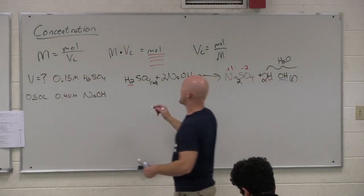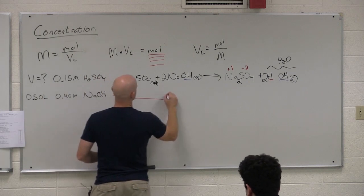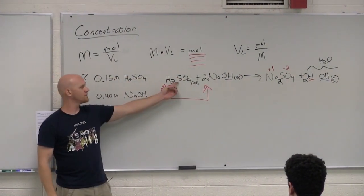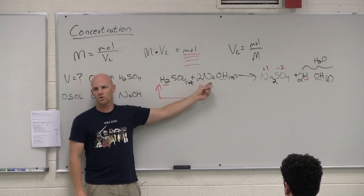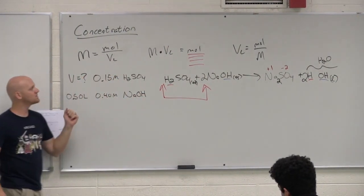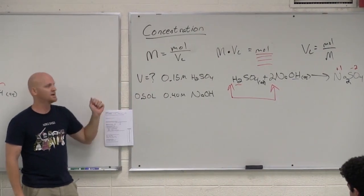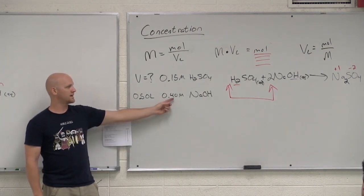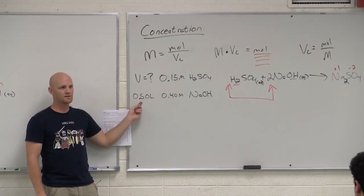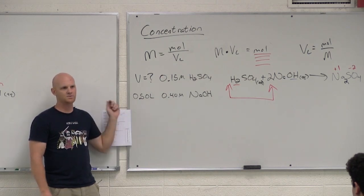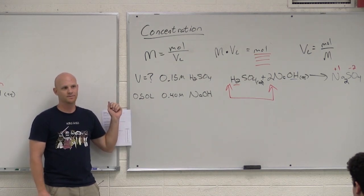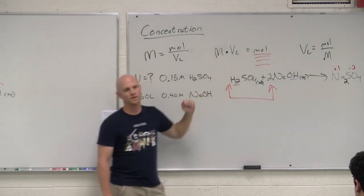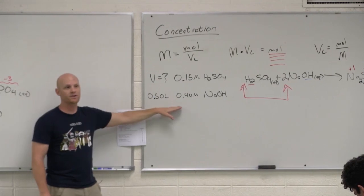So help me balance this. Where do you want to start? Good. Two sodiums on this side. So to get two on this side, I need two of these. But it gives me two hydroxides. How do I make sure I get two hydroxides on this side? Coefficient of two in front of water. But that gives me two H's. I've got two H's from the acid. One sulfate. One sulfate. We're good. The big thing I needed here was the mole to mole ratio in which these react. For every one mole of H2SO4, it requires two moles of NaOH to react with. That's what I needed to be able to answer this question right here.